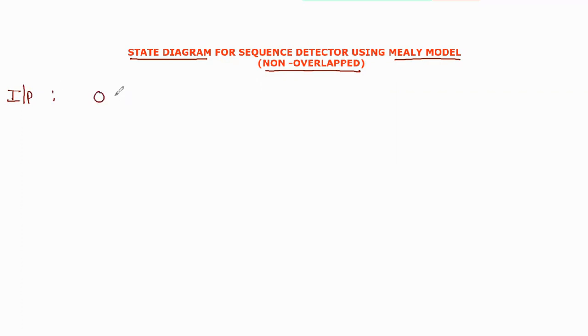The sequence detector is a circuit used to detect a reference input sequence. If you detect any matching bits, the circuit outputs accordingly. Let me show you the reference input sequence. This sequence is: 0, 1, 0, 1, 0, 1, 1, 0, 1, 0, 1, 0, 0, 1, 0, 0, 1, 0, 0. This is my input sequence.